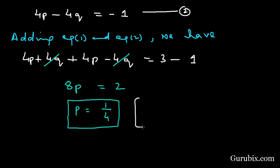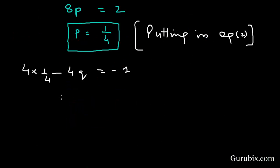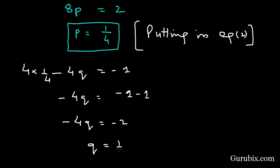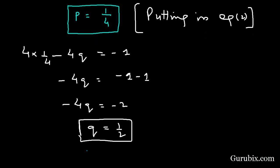From 8p = 2, we get p = 1/4. Substituting p = 1/4 into equation number 2: 4(1/4) - 4q = -1, which gives 1 - 4q = -1, so -4q = -2, meaning q = 1/2.